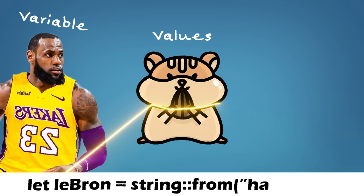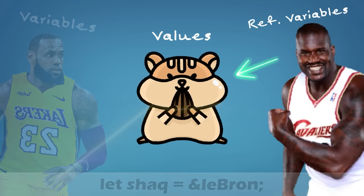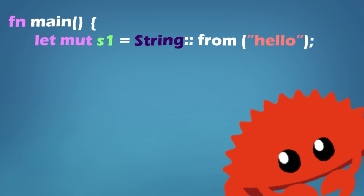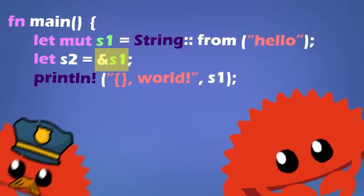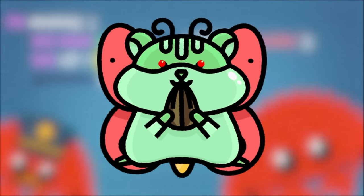In Rust, values are owned by variables, values can be referenced by variables, and when an owning variable goes out of scope, it is deallocated. Another thing that makes Rust unique is that it protects against multiple threads trying to access the same data at once, which is also called a data race. It does this by making sure you have either one mutable reference or any number of immutable references, making sure that the references are always valid, and making sure that the value cannot be mutated when a valid reference exists.